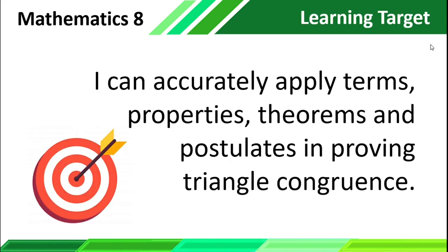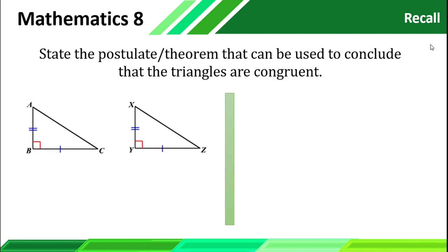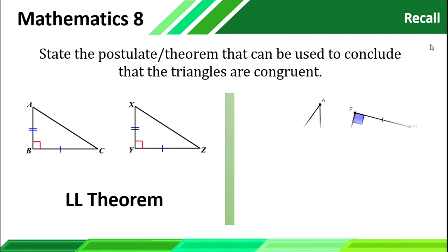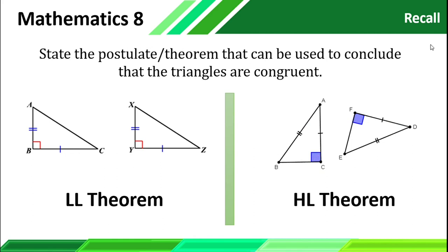Let's have a short recall first on our right triangle congruence. State the postulate or theorem that can be used to conclude the triangles are congruent. On figure number 1, we have 2 legs, so this is under the LL theorem. On our second figure, we have a given hypotenuse and leg, so this is under the HL theorem.